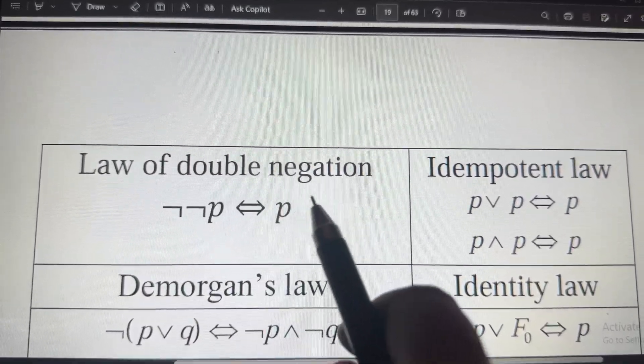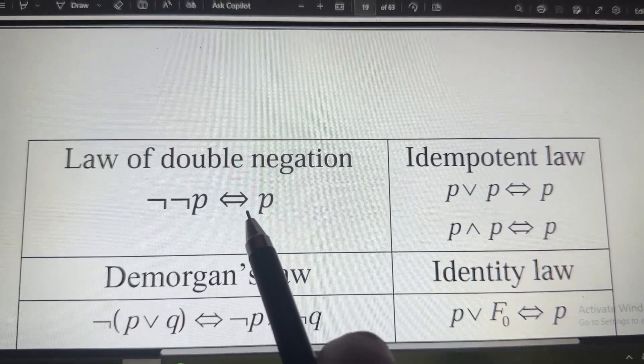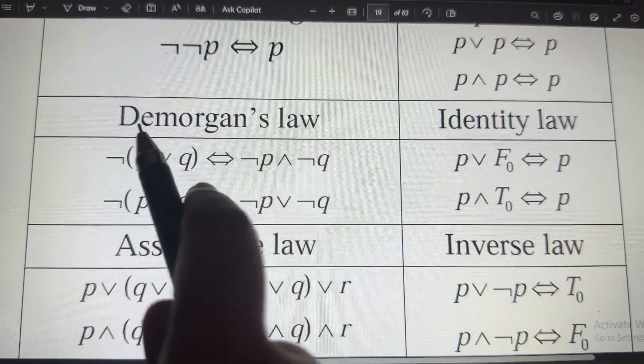Law of double negation. So, you will apply double negation. So, it is P. Then, we have DeMorgan's law.